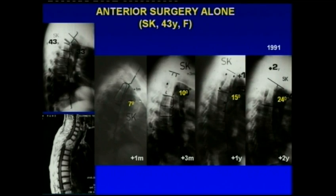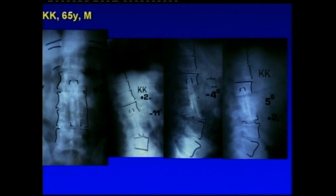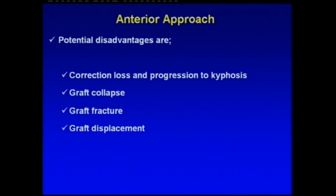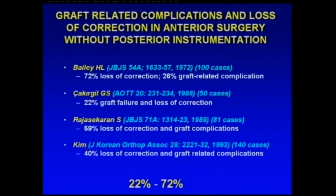Looking at the X-ray during follow-up, you can see loss of correction and progression of kyphosis. In another lumbar case 20 years ago, we performed a Hong Kong procedure in the lumbar spine using fibular autograft, and again observed loss of correction and loss of lordosis. The Hong Kong procedure has disadvantages such as progression to kyphosis, graft collapse, graft fracture, and graft displacement, with 22% to 72% graft-related complications reported.